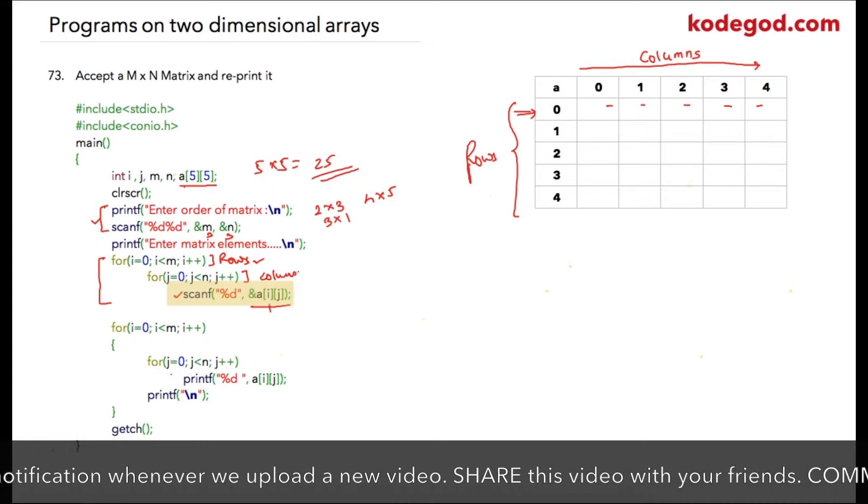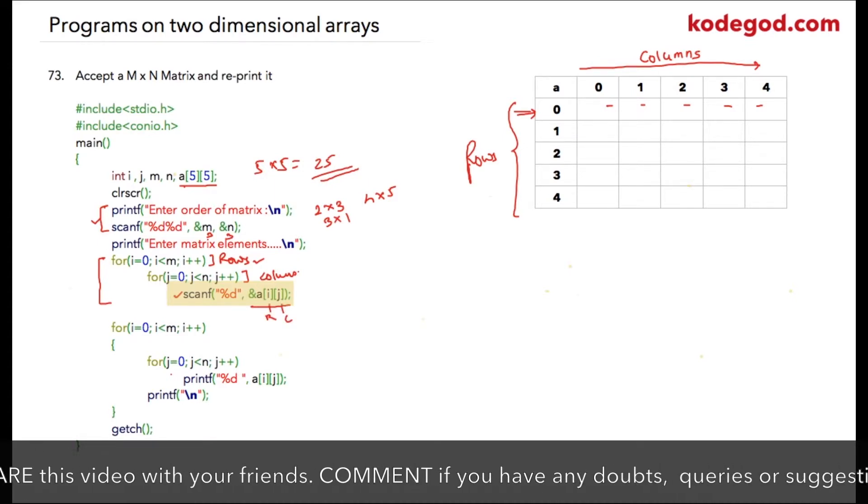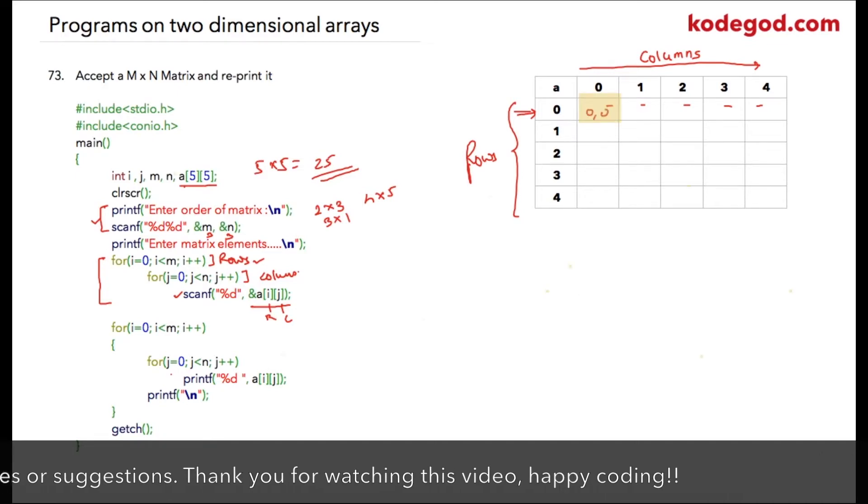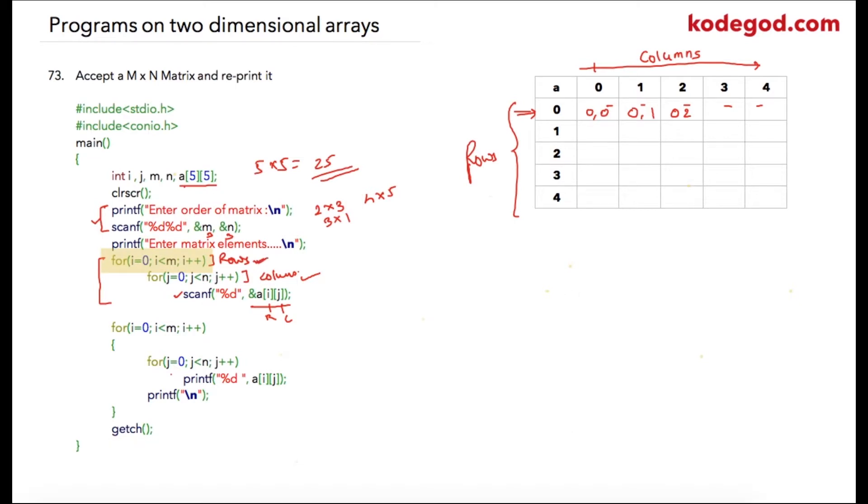So this is your row and this is your column. The first value that will be scanned will be zero zero row, so this is zero row and this is zero column. Similarly, zero row and first column, zero row and second column, and that will complete your this for loop. So the value of i will be incremented and the next row will be scanned.